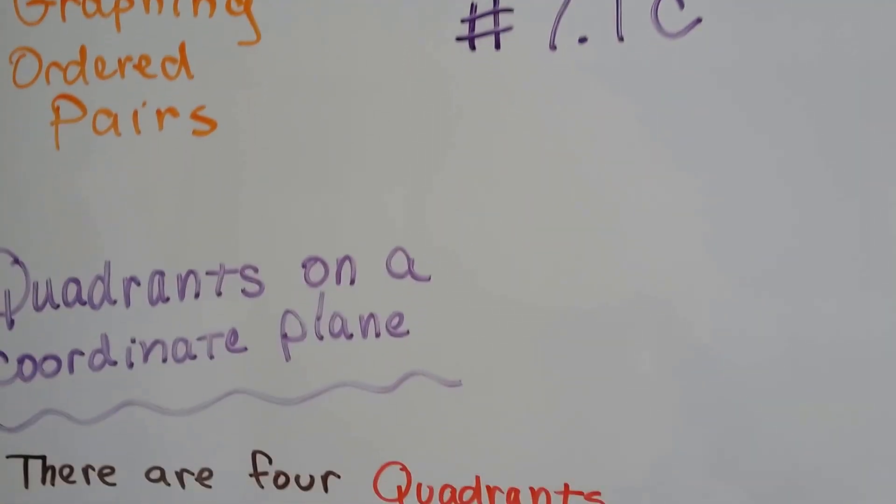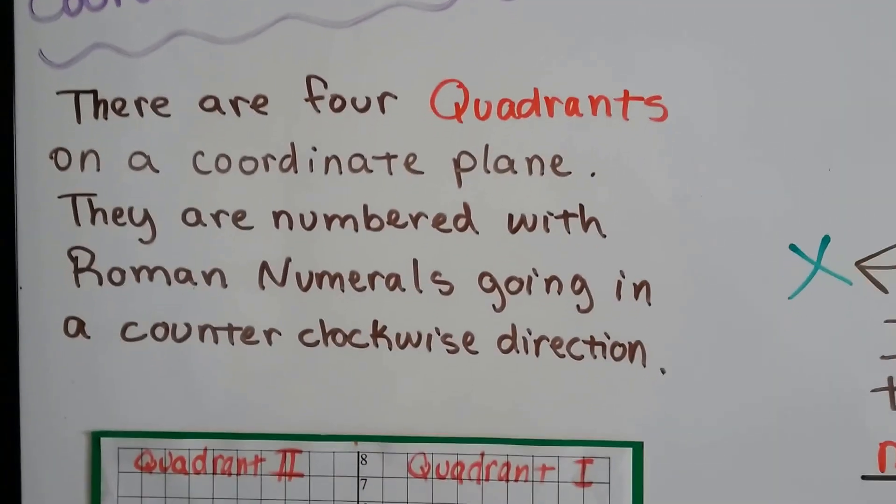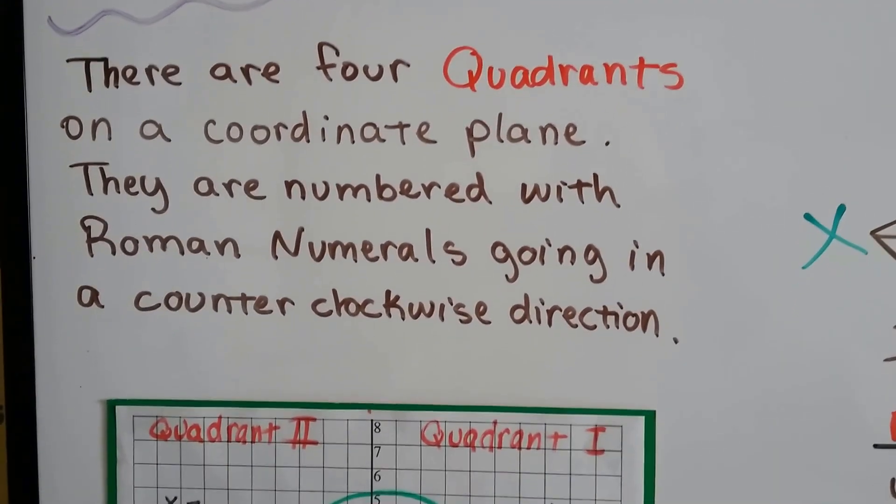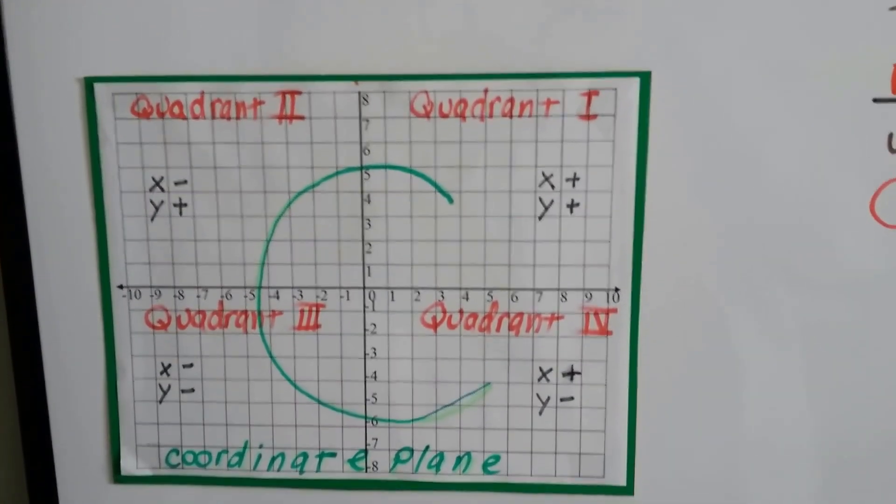7.1c, quadrants on a coordinate plane. We've been talking about this for the last couple of videos, and there are four quadrants on a coordinate plane and they're numbered with Roman numerals going in a counter-clockwise direction.